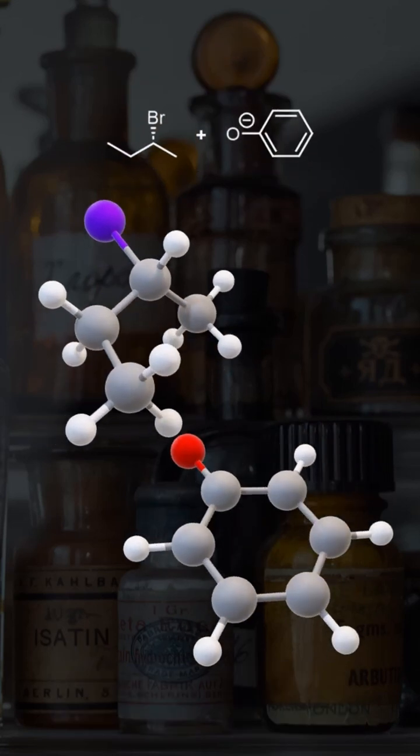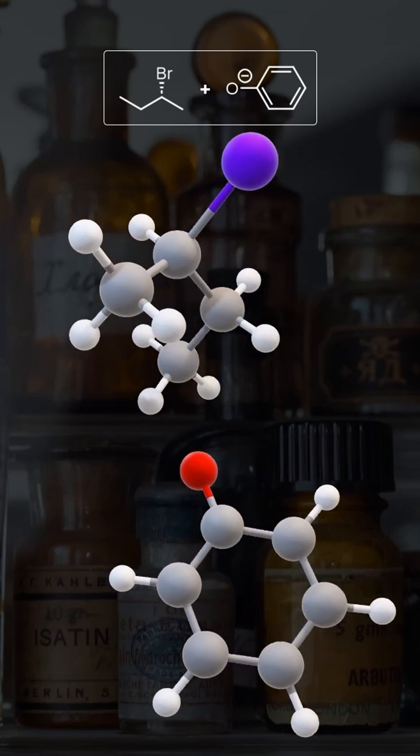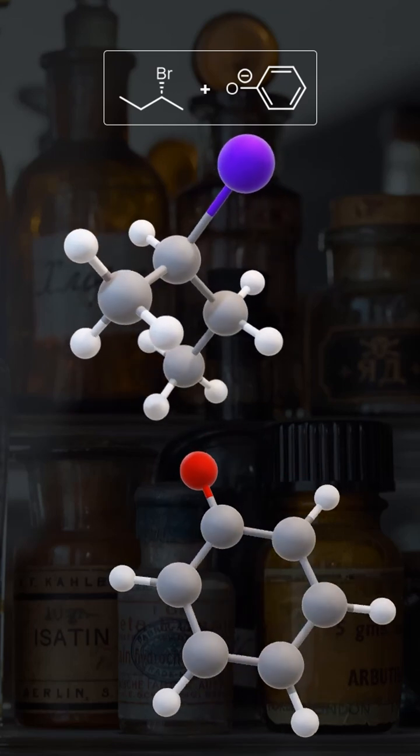Our first model is the nucleophilic substitution of 2-bromobutane with the phenylate anion, also called a Williamson ether synthesis.